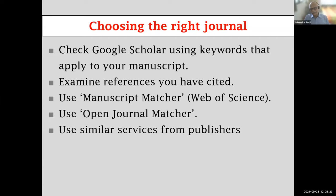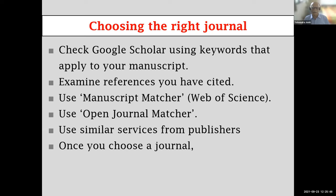The major publishers — Elsevier, Springer, Wiley, Taylor and Francis — also have similar web pages, but they will only recommend journals from their own catalog. Wiley has Journal Finder; Springer has Journal Suggester. They all work the same way. You can use any of these means, or preferably a combination, to find your target journal.